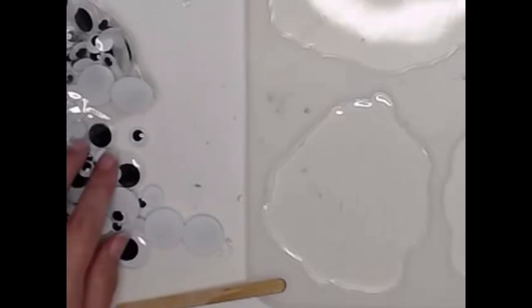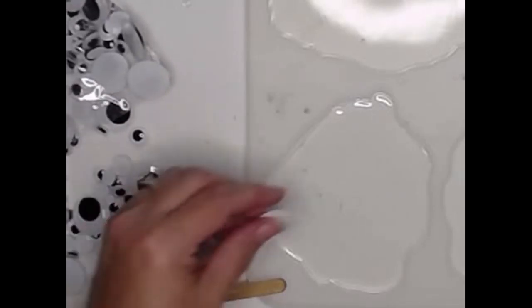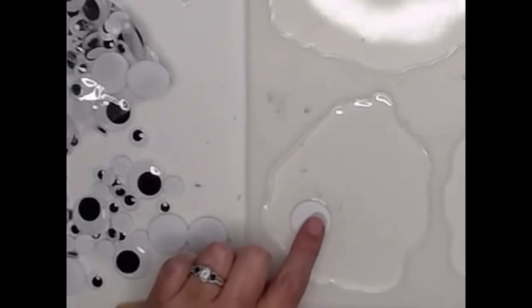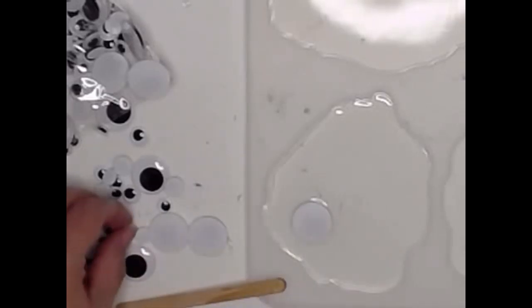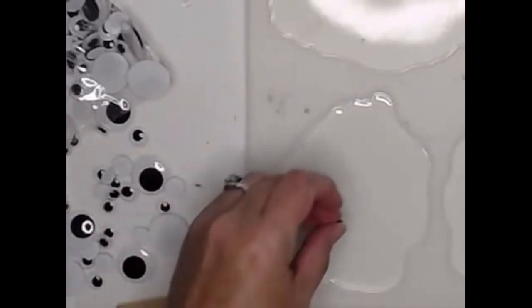All right, and now for the fun. Okay, and see over here, I've just dumped out all the googly eyes, and I'm just going to start placing them randomly into our resin. The reason we put that first layer of resin down is so that they don't poke through onto the top.